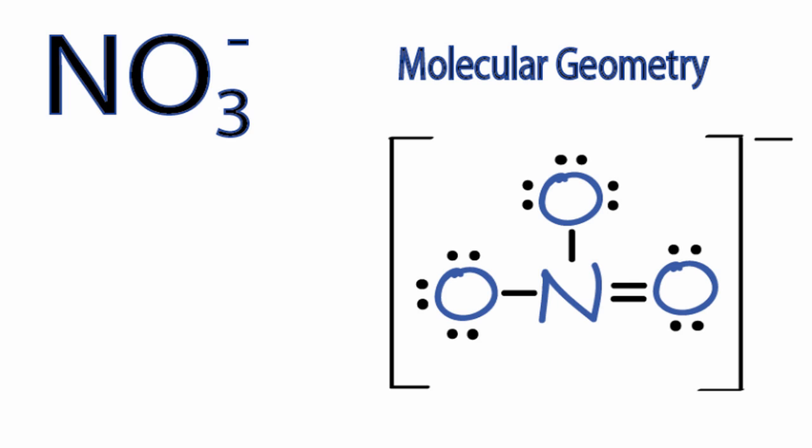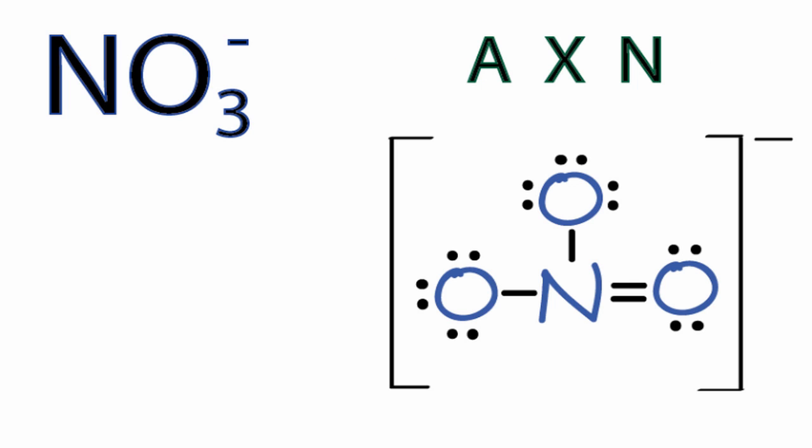We could also use the AXN notation to figure out the molecular geometry. Here A is the central nitrogen - we have one of those. X is the number of atoms bonded to this central nitrogen. We have one, two, three oxygens bonded to it.